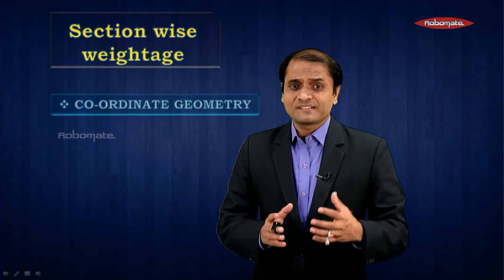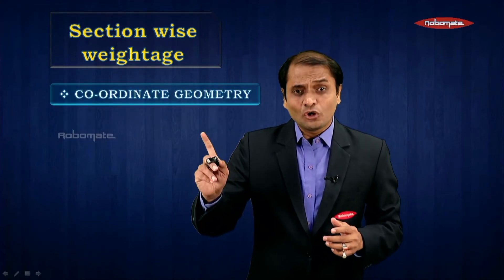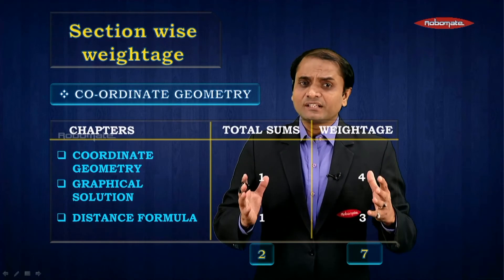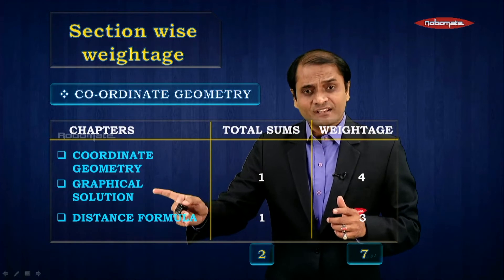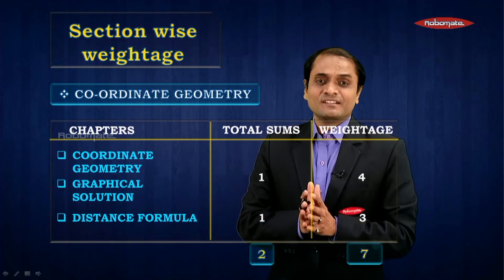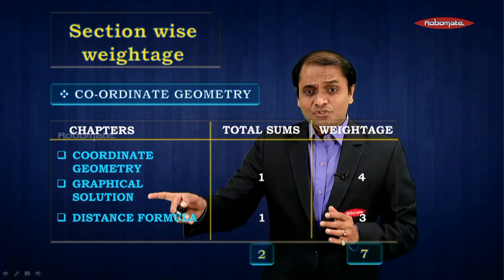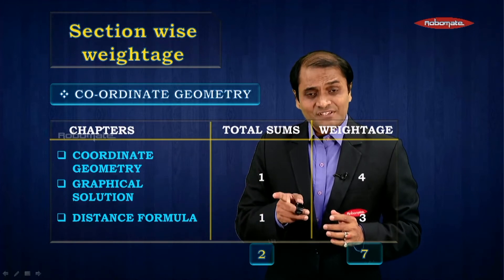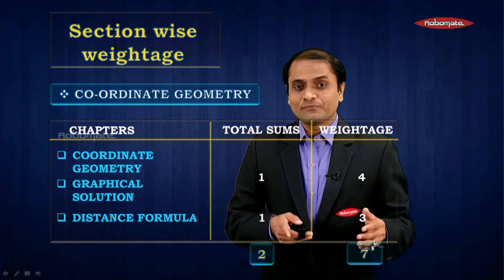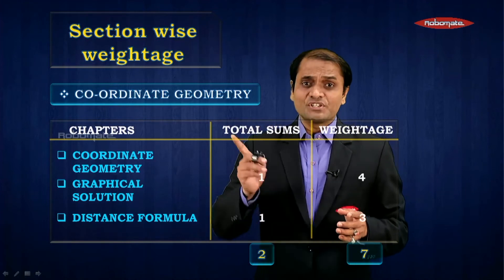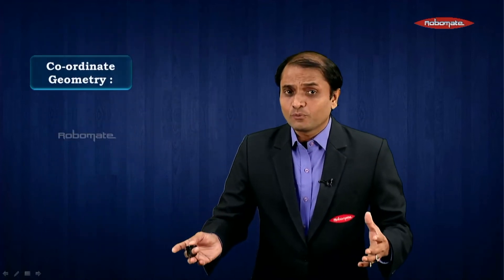Welcome back. We are seeing the section-wise weightage of your syllabus. The next section I have chosen is coordinate geometry. There are three topics in coordinate geometry: first, coordinate geometry; next, graphical solution; and the last one, distance formula. Out of these, you will get only one question from any one topic for four marks, and from distance formula you could get one question for three marks — so total two questions from this section for seven marks.